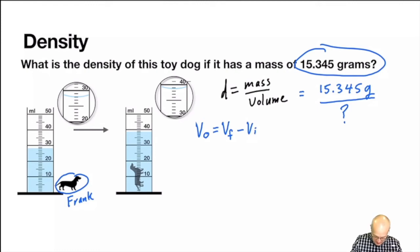So let's measure. Initial volume, VI, equals 28.0. And if we take a look at the meniscus when Frank is placed inside the graduated cylinder, 38.9 milliliters, and that's VF.